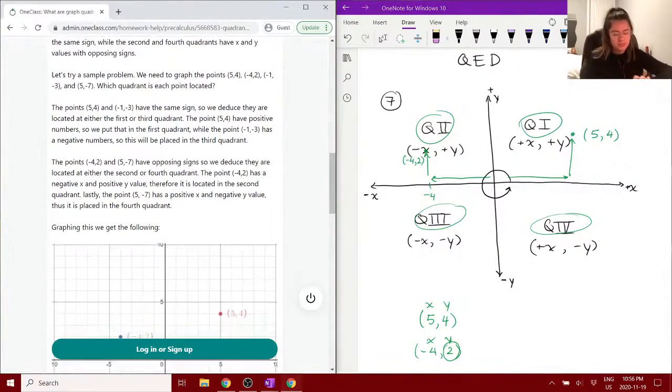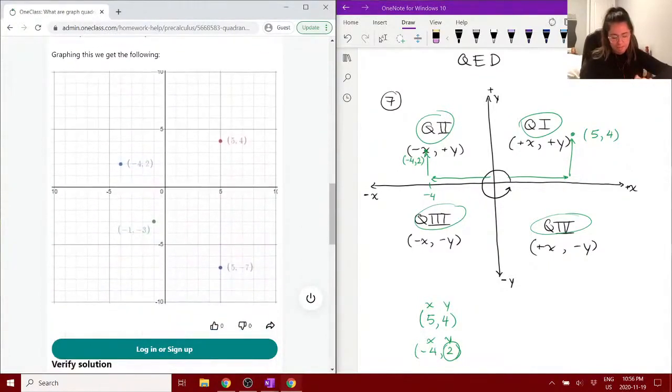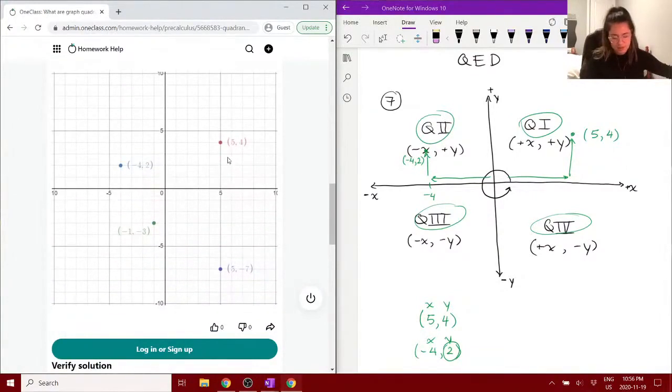But that's how you would use the quadrants. So here we go. So I just did the 5, 4 points. We have negative 4 and 2. And then, finding negative 1, 3 while we go in the house to negative 1.